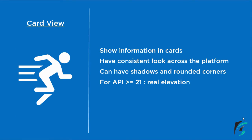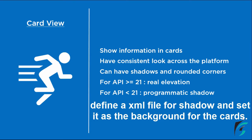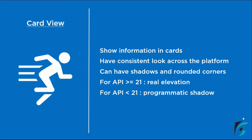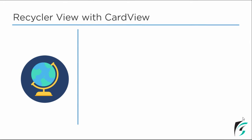When we talk about elevation for the CardView, for API level greater than 21, the real elevation is used. Whereas for API level less than 21, we have to provide our CardView's programmatic shadows. Now let us proceed towards the steps we need to follow for implementing the RecyclerView and the CardView, and we will proceed with each of these steps one by one.